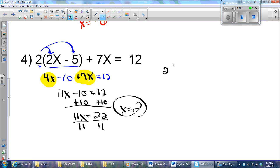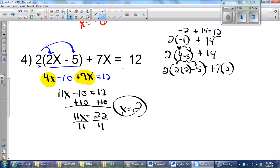And I have 2 times the quantity of 2 times 2 minus 5, plus 7 times 2. And this will be 2 times 4 minus 5 plus 14. I'll have 2 times negative 1 plus 14. And so now I'll have negative 2 plus 14 equals 12, and that's what I wanted, so yeah, I did it right.